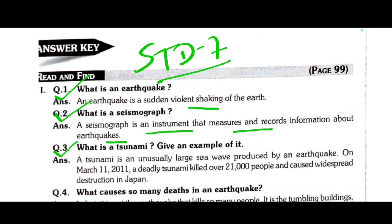Question 3: What is a tsunami? Give an example of it. A tsunami is an unusually large sea wave produced by an earthquake. On March 11, 2011, a deadly tsunami killed over 21,000 people and caused widespread destruction in Japan.